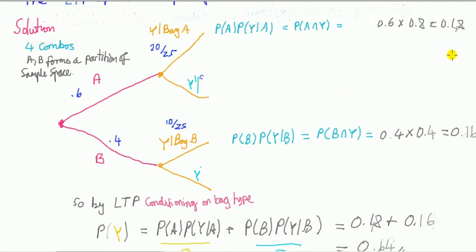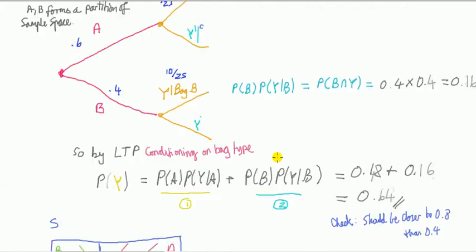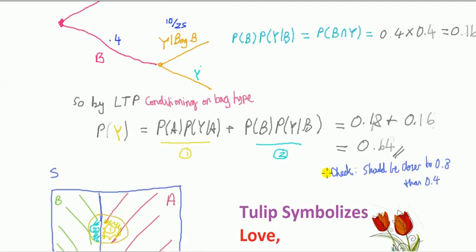Then what I do to get the probability of Y is I just add the probabilities, so that plus that gives me the answer. What I've actually done is the law of total probability by conditioning on bag type, which is what the event Y depends on. Bag type can be A or B. This is A and yellow, this is B and yellow, expressed in terms of conditionals and marginals. So I get 0.64, and we said it should be closer to 0.8 than 0.4, and indeed it is. So that looks right.